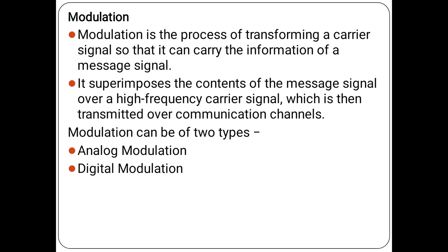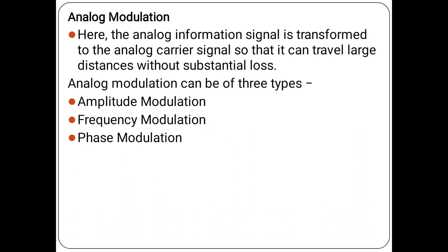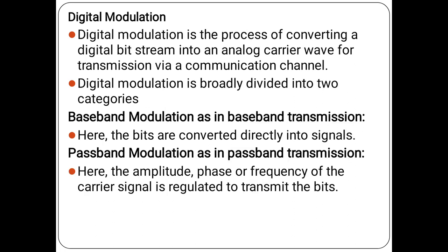There are two types of modulation: Analog Modulation and Digital Modulation. In Analog Modulation, the analog information signal is transformed from the analog carrier signal so that it can travel large distances without substantial losses. The three types of analog modulation are Amplitude Modulation, Frequency Modulation, and Phase Modulation.